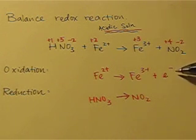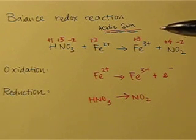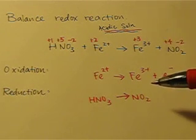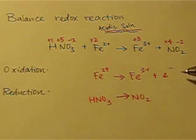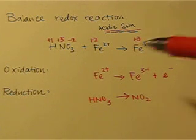We can only add electrons, which means we can only bring the charge down. So, going from 3 plus to 2 plus overall. This is our half reaction for oxidation.